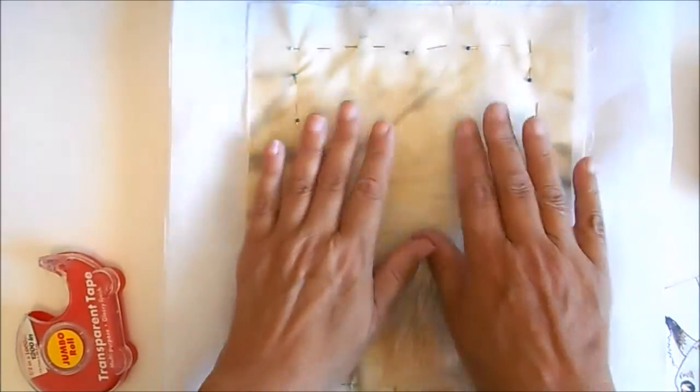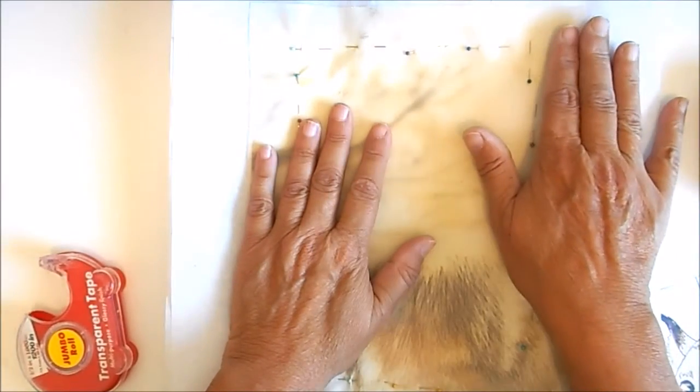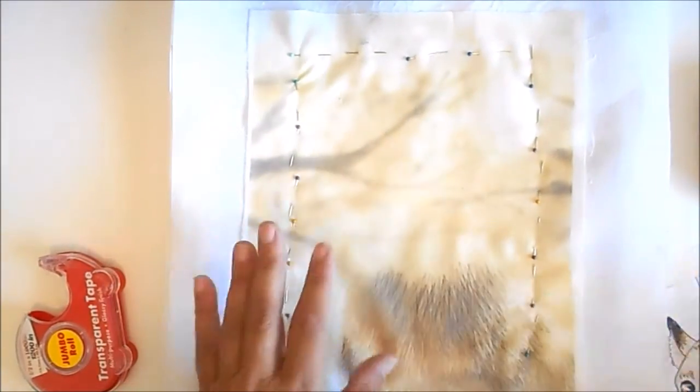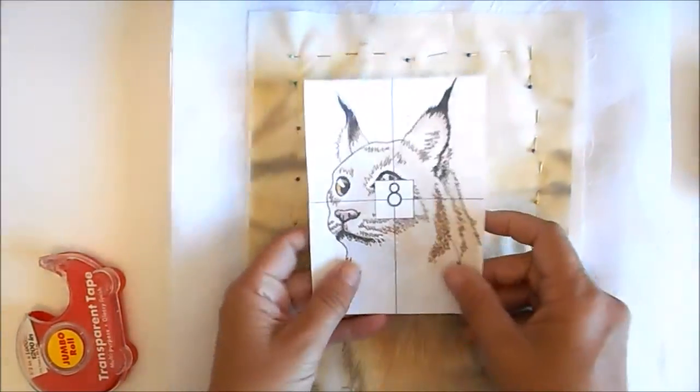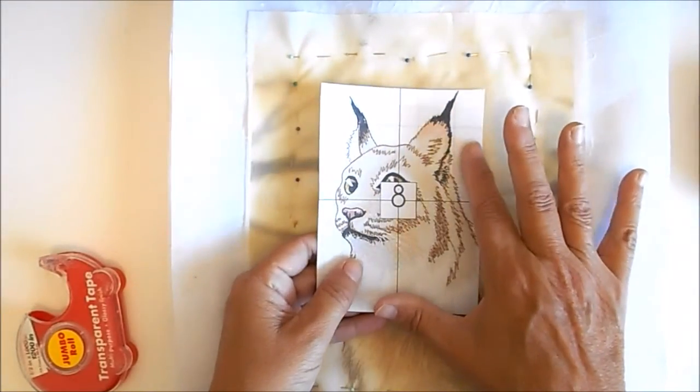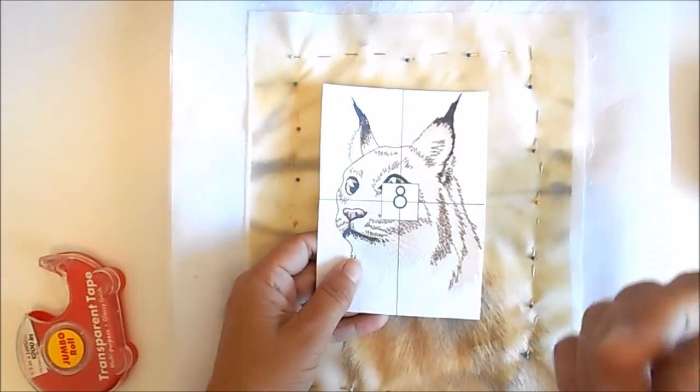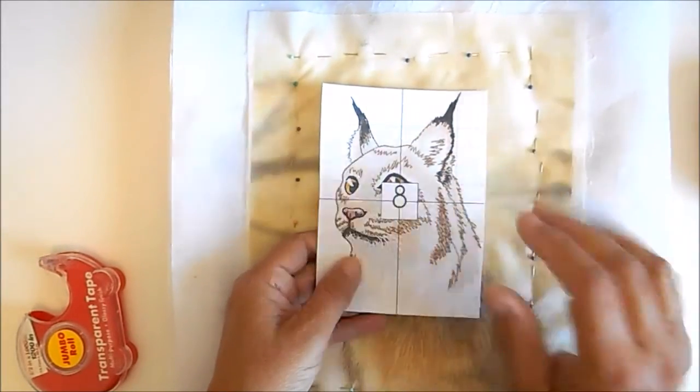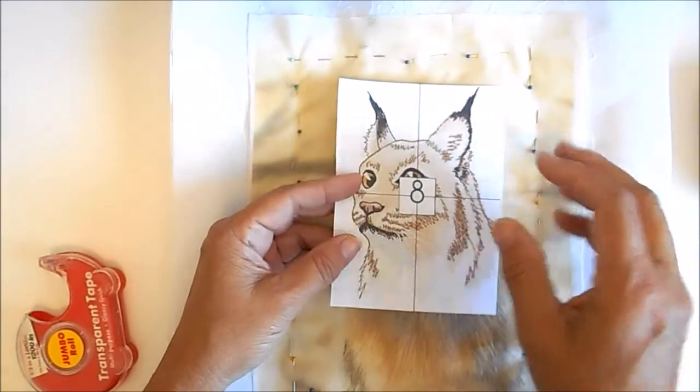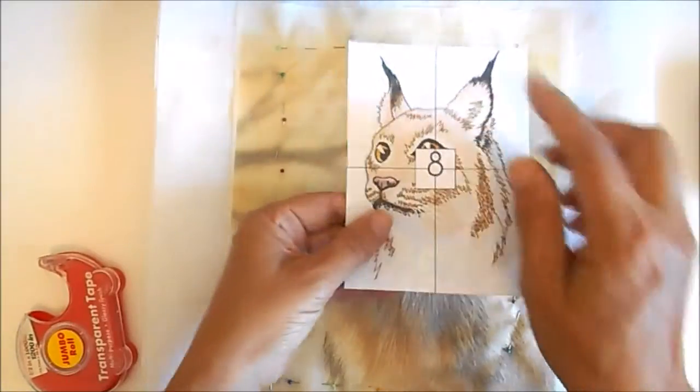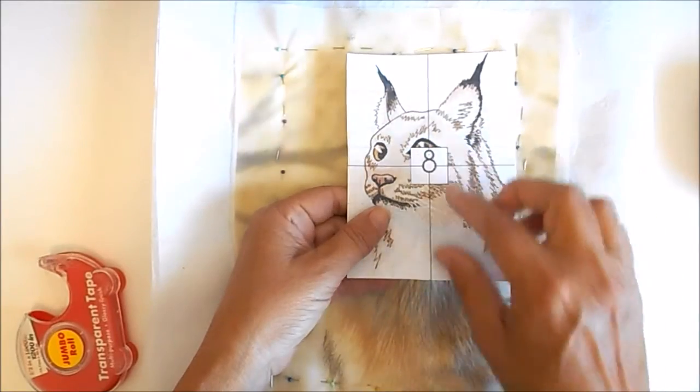I have the fabric pinned to the stabilizer now and I'm ready to hoop it. But before I do that, I've got the printed template. Now you'll find these templates in the Wildlife Wonders Design Information PDF file. And you can print it out and cut it out. And this is going to show you the exact center of the design.